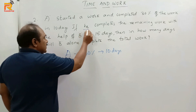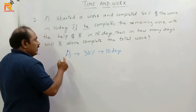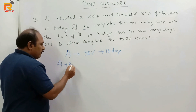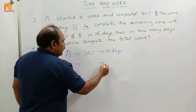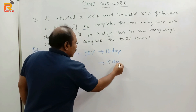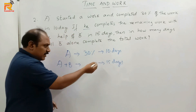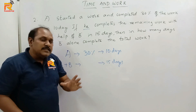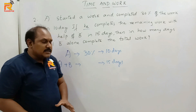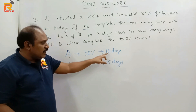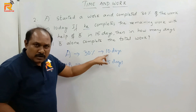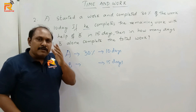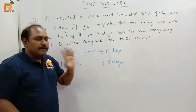If A completes the remaining work with the help of B in 15 days, we can see that the total work is completed in 25 days. Who is the person working for all 25 days? Definitely it is A. A worked initially for 10 days alone and later for 15 days along with B. So A worked for 25 days and B worked for 15 days.